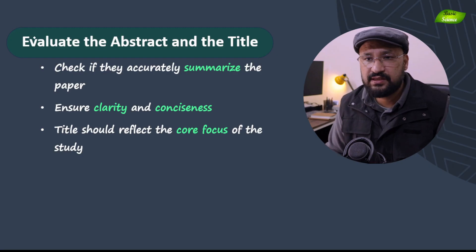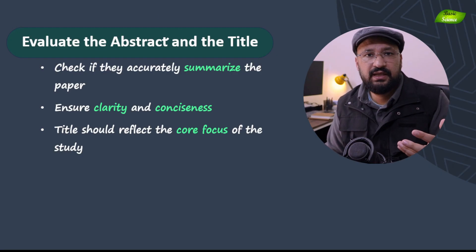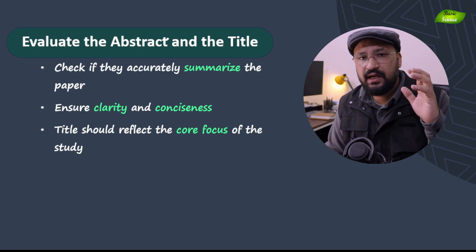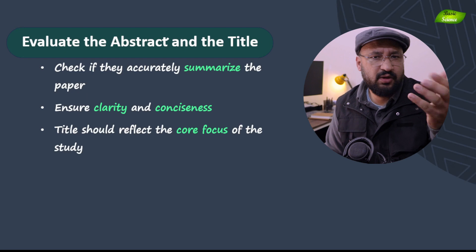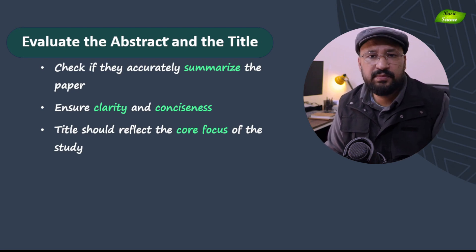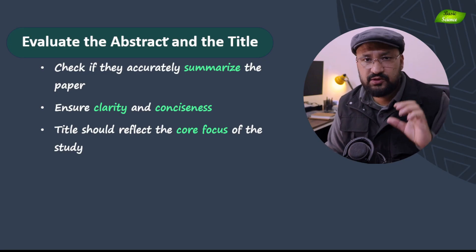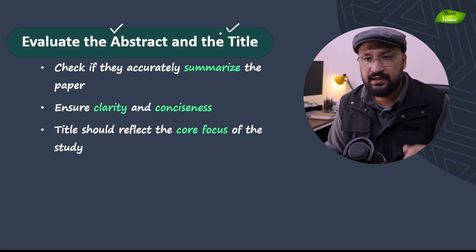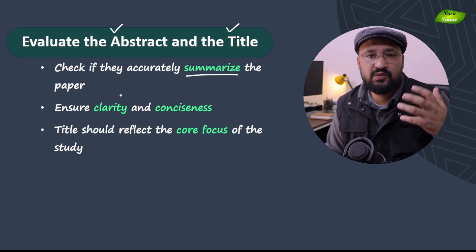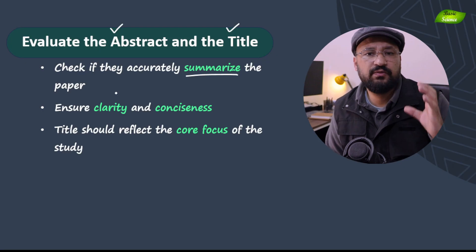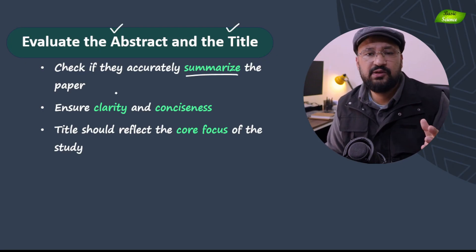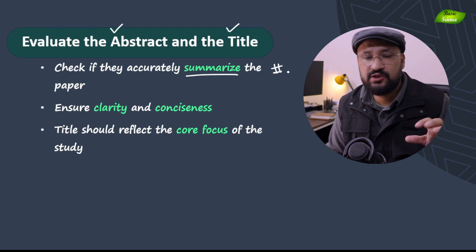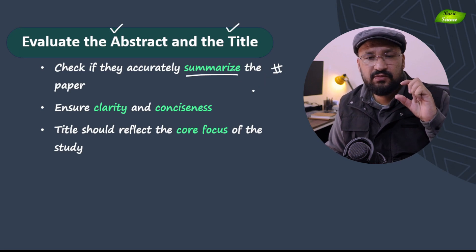Let's move on to the second point. You will be getting a manuscript in PDF format or maybe a Word document, and you can have supplementary information. The manuscript will have a title and abstract, and sometimes author affiliations may or may not be present. Your job is to critically see what is in the abstract. The abstract should summarize the entire paper — it is basically the shortest form of the research paper. So the abstract you are reviewing should reflect the entire summary of the paper in a very concise and clear way.